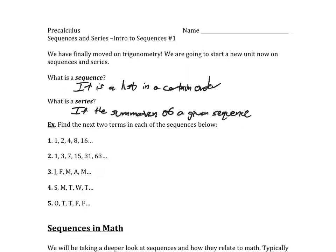I want you to pause the video and see if you can come up with the next two terms in each sequence based off the pattern you've seen so far. Numbers three through five are just kind of fun — you won't see many of those, but they are common sequences. Hit pause, give it a shot, then unpause and see if you get the same thing I do.